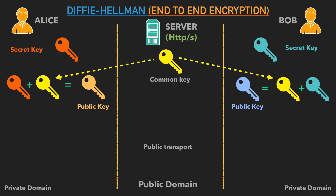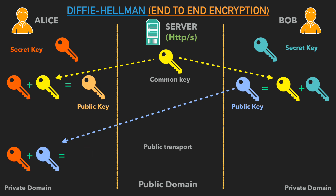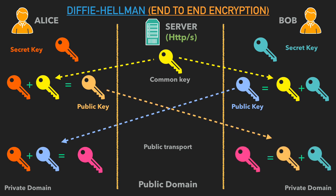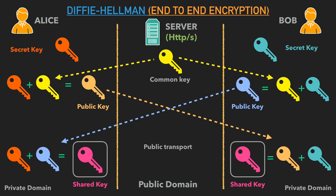Now Alice takes Bob's public key and mixes it with her red secret key, producing a new key shown as pink. Similarly, Bob takes Alice's public key and mixes it with his secret key, also producing a pink key. The mathematics ensures that both pink keys are identical. This becomes the shared secret key that Alice and Bob use to encrypt and decrypt messages between each other. This is how the Diffie-Hellman key exchange generates a shared secret at the client's end.